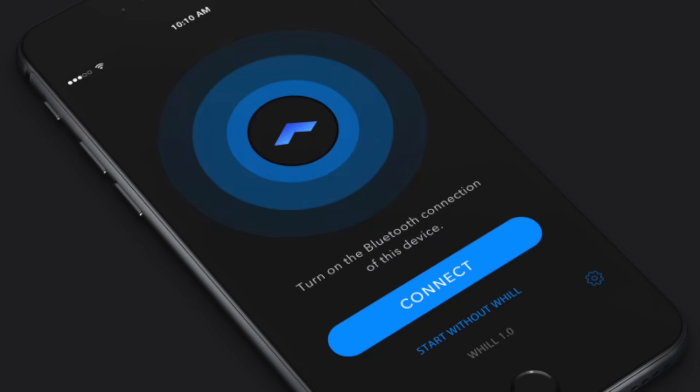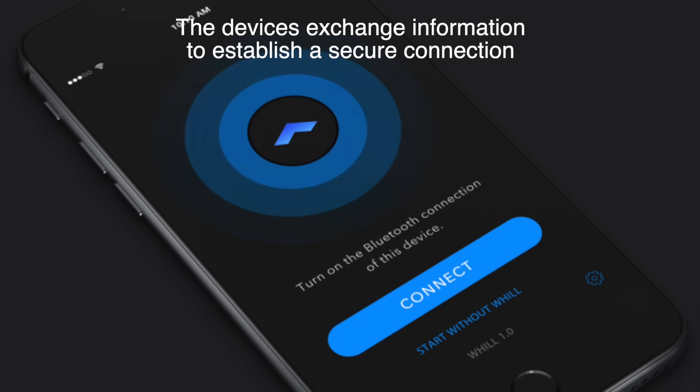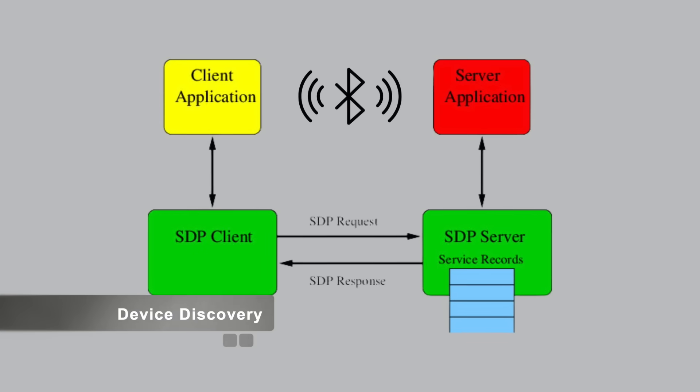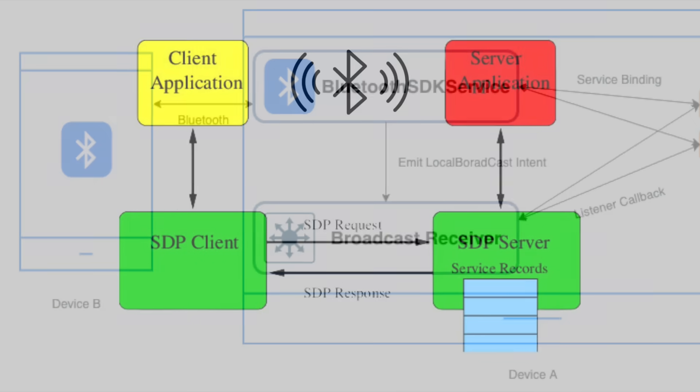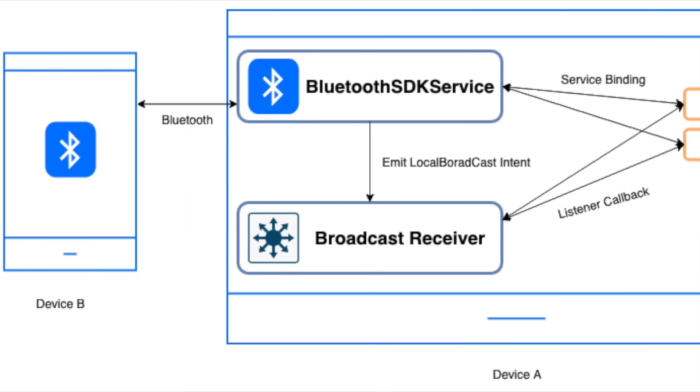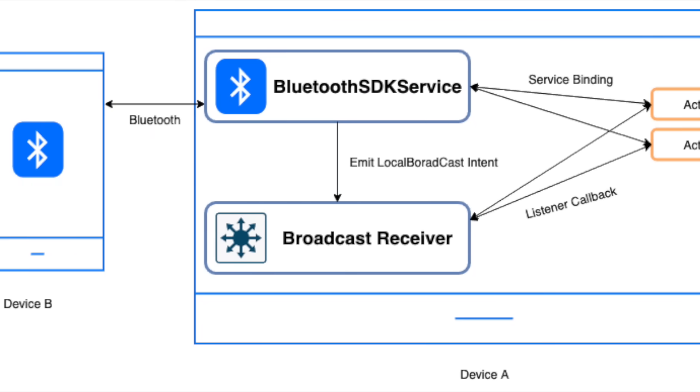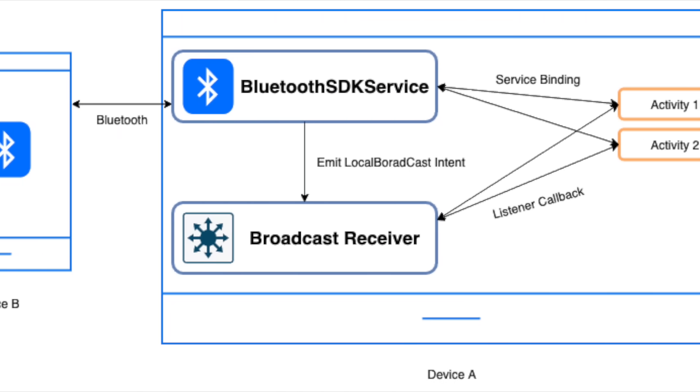Before two Bluetooth devices can communicate, they need to pair, a process that might feel like an awkward first date. During pairing, the devices exchange information to establish a secure connection. This involves a process called device discovery, where one device broadcasts a signal and the other responds. Once they find each other, they generate a unique key, often secured with encryption, to keep the connection private.